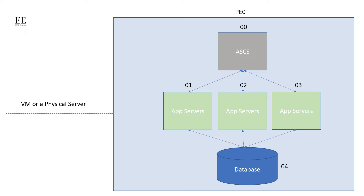An ABAP system has a system identifier, also known as SID, and separate instance numbers. SIDs are usually three-letter combinations of alphanumeric characters and instances are two-digit numeric. For example, the SID of an SAP system can be something like PE0, the instance number of ASCS can be 00, whereas the instance numbers of the application servers can be 01, 02, or 03 depending on how many application servers there are. SIDs and instance numbers are assigned during the installation of an SAP system.